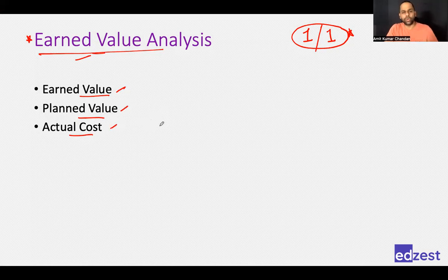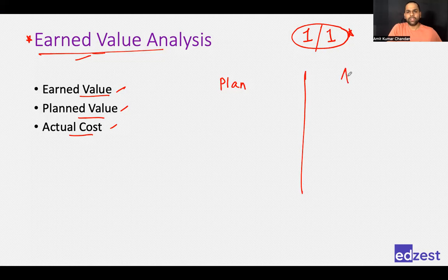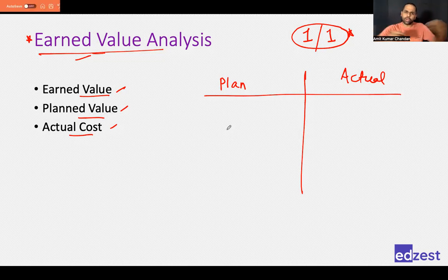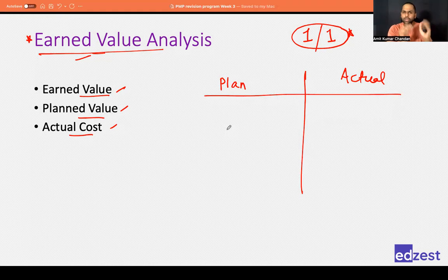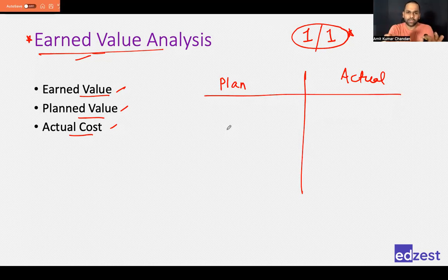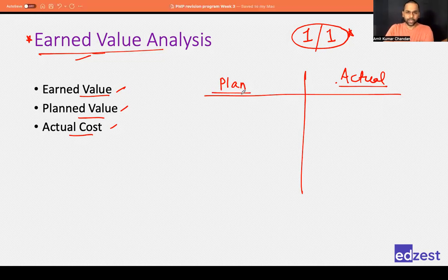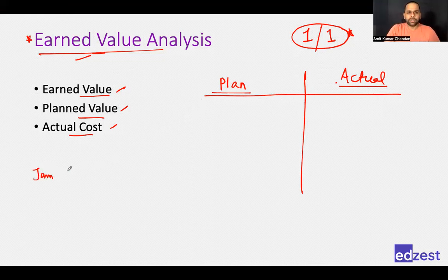Earned value analysis is about understanding your performance in the project — are you working faster or slower, are you spending more or less? There are three key parameters. We have a plan and something actual; every month or every few months throughout the project, you check your performance by comparing plan to actual.